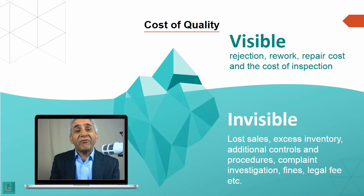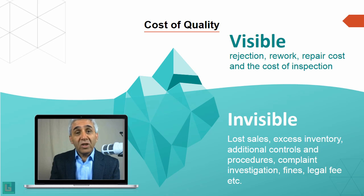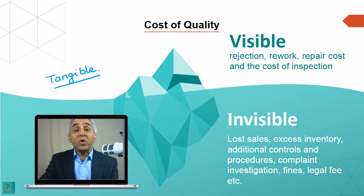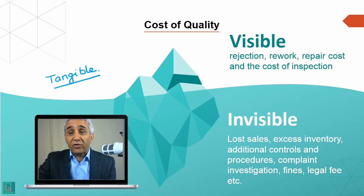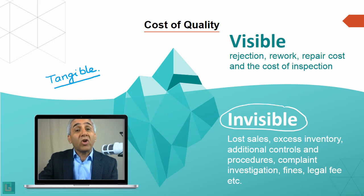Feigenbaum classified cost of quality into two major chunks: the visible cost and the invisible cost. The visible cost is also known as the tangible cost — what you can see, feel, and understand. Then there is a hidden part, the invisible cost, also known as the intangible cost of quality.